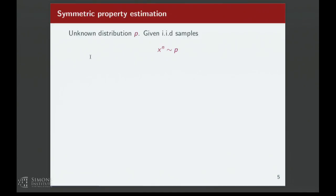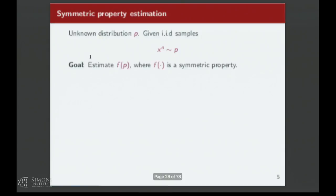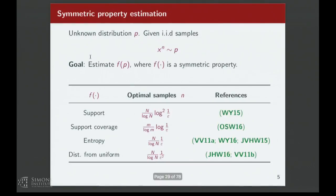None of these heuristics actually have guarantees, but people experiment with them and see how well they perform for data sets of interest. Let me say why we might be interested in profile maximum likelihood. There's another reason beyond it being a natural object of study: estimating symmetric properties. A symmetric property is one invariant to permutations of labels, and the profile of the sample is actually a sufficient statistic for any symmetric property.